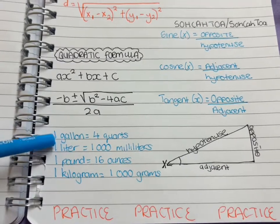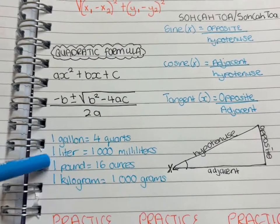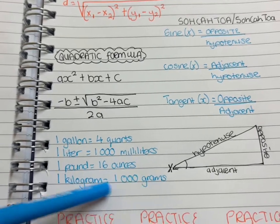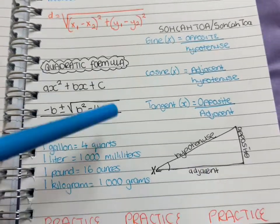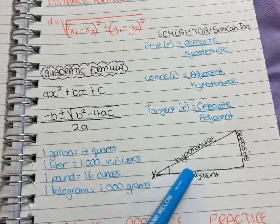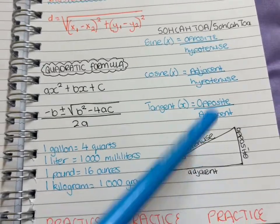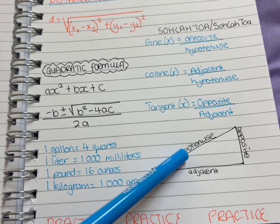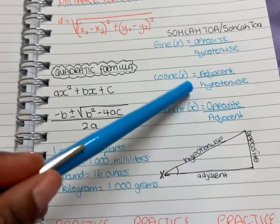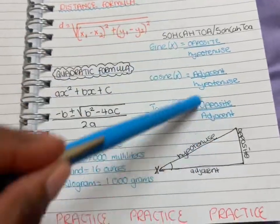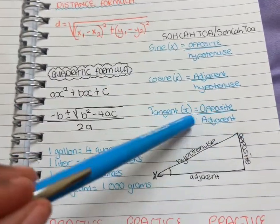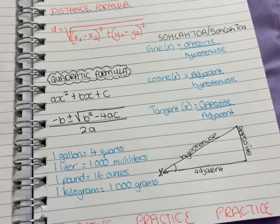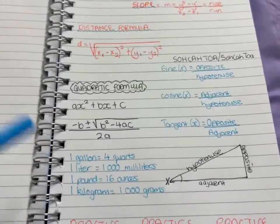Extra information that I feel you need to know: one gallon is four quarts, one liter is 1,000 milliliters, one pound is 16 ounces, one kilogram is 1,000 grams. On the right side of that, that's the most important thing—the hypotenuse, adjacent, and the opposite. That's the diagram for all of this. These guys go together. Make sure you remember that.